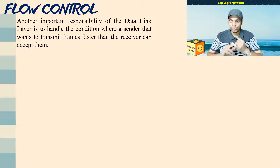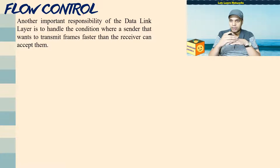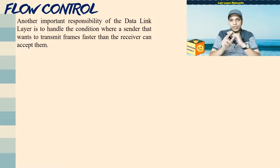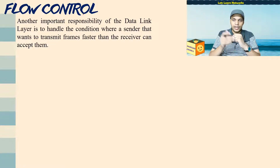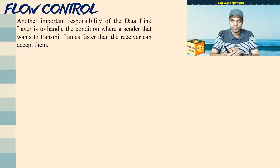The second part is flow control. You have done your framing — helping the receiver identify frame boundaries — and ensured frames are received correctly. But what if a sender is sending 100 frames per second and the receiver can only accept 10 frames per second? Even though frames arrive without errors, the receiver cannot handle that data rate. It is up to the data link layer to ensure this does not happen. A fast sender cannot simply send at its own rate.